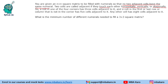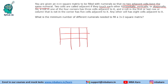We have to find the minimum number of different numerals needed to fill a 3×3 square matrix. Maximum we can fill 9 different numbers, but we need to find the minimum. Minimum means we try to use as few digits as possible.